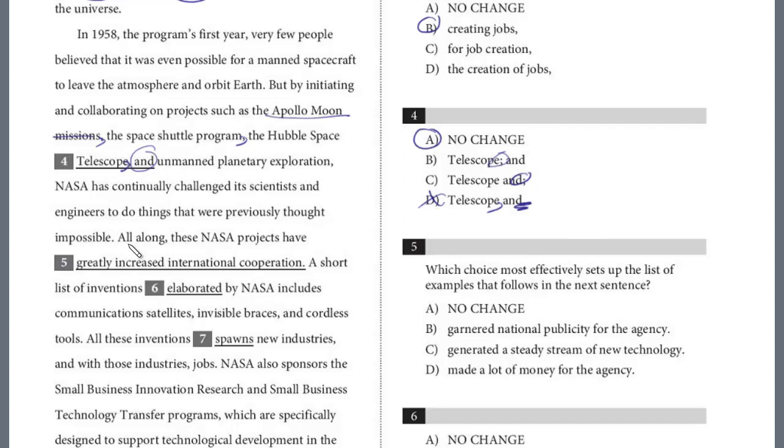All right, let's take a look at five. All along, these NASA projects have greatly increased international cooperation. So let's take a look at the question here in five. Which choice most effectively sets up the list of examples that follow? We have to see, is this a list that follows that would support this first sentence of increasing international cooperation? Let's take a look.